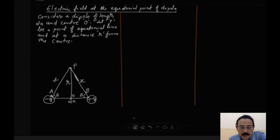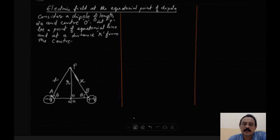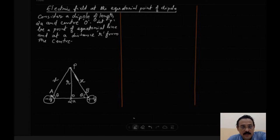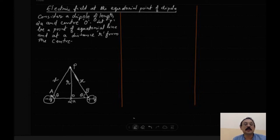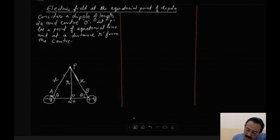We assume that at point P we keep a test charge. The test charge is considered to be positive and vanishingly small, with negligible effect on the source charge, but the source charge has a strong effect on the test charge. Since the negative charge at A is the source charge, it will pull the positive test charge from P towards it — an attractive force.